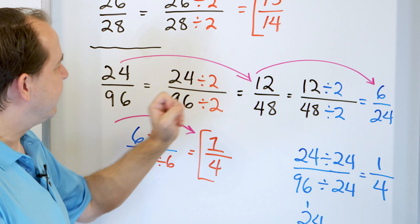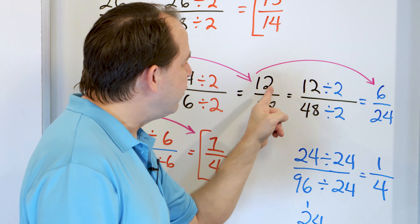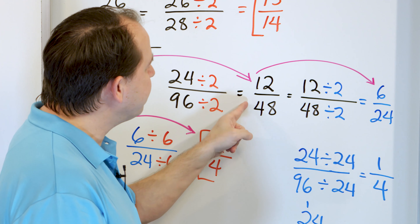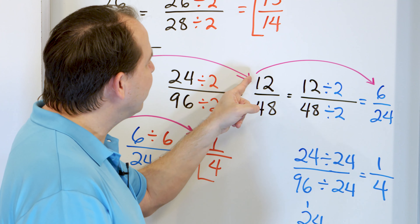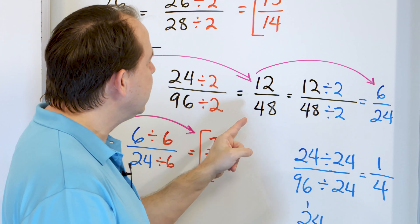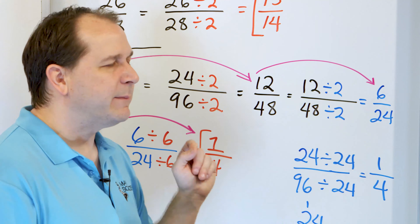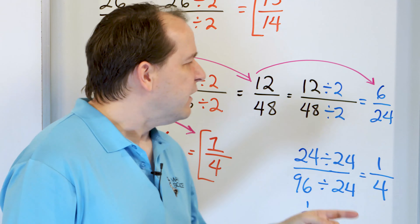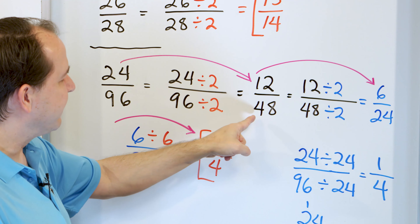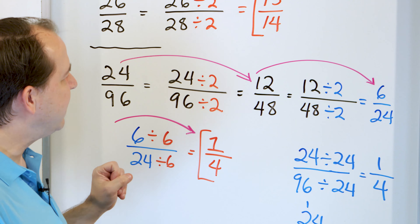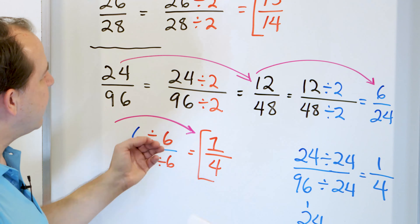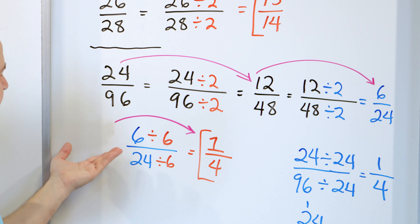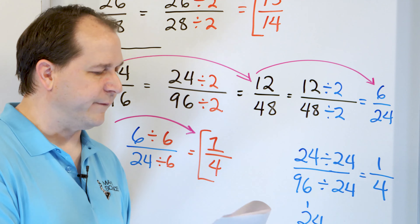If you're clever, once you get to twelve forty-eighths, you can see that you can divide top and bottom by twelve — twelve divided by twelve is one, and forty-eight divided by twelve is four, because twelve times four is forty-eight. So you might be able to shortcut a couple steps by dividing by twelve here. If you didn't think of it, divide by two again, then divide by six, and get the final answer of one-fourth.